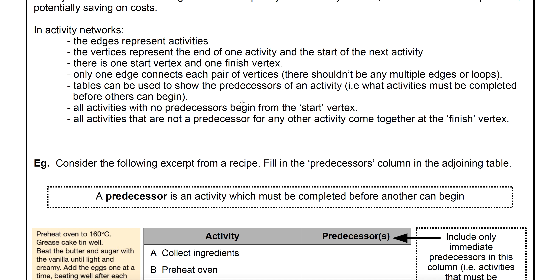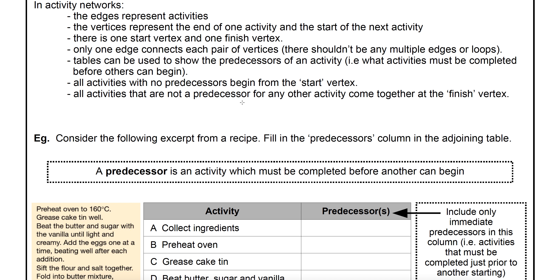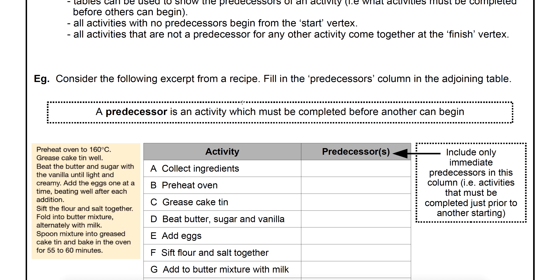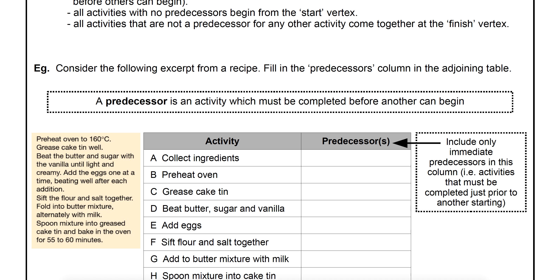The tables show what we call a predecessor of an activity — what has to be done before another activity can begin. If an activity is a predecessor, it has to be completed before the next one can start. All activities that don't have a predecessor will start at the beginning, at the start vertex. And if an activity is not a predecessor of anything else, it's going to come together at the finish.